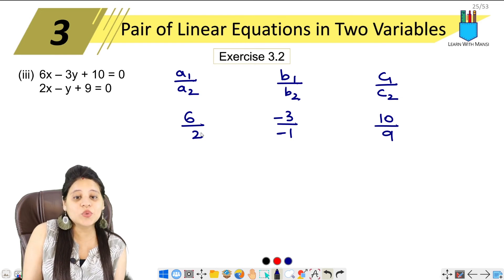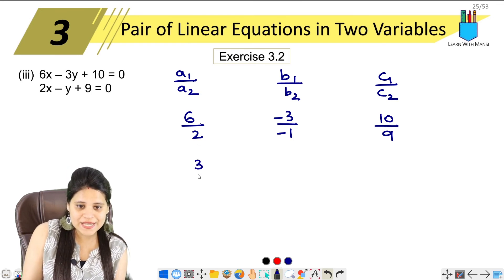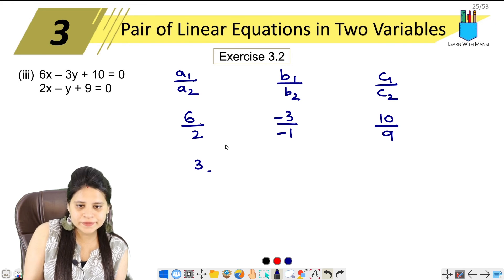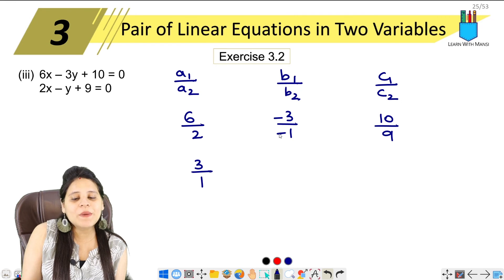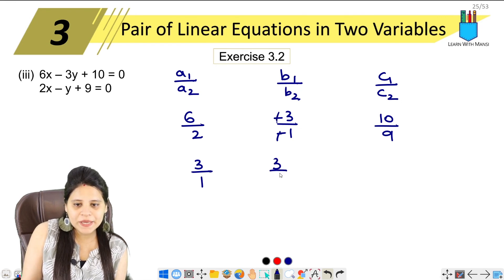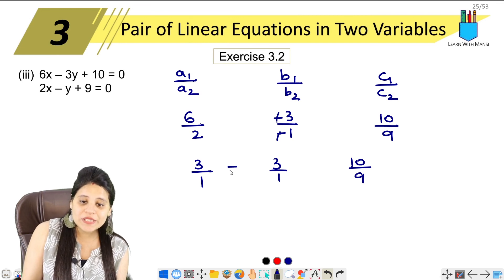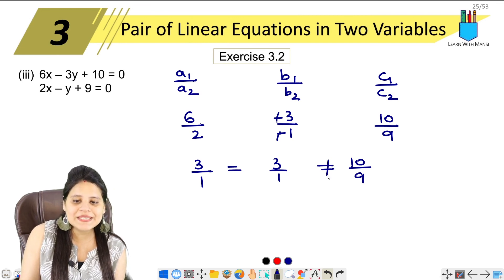Now we see, 6 divided by 2 is 3. Minus 3 divided by 1 is minus 3, which simplifies to 3 upon 1. And 10 upon 9 stays as it is. So this is 3 upon 1, this is also 3 upon 1, and this is 10 upon 9. That means the first two are equal, but the third is not equal.